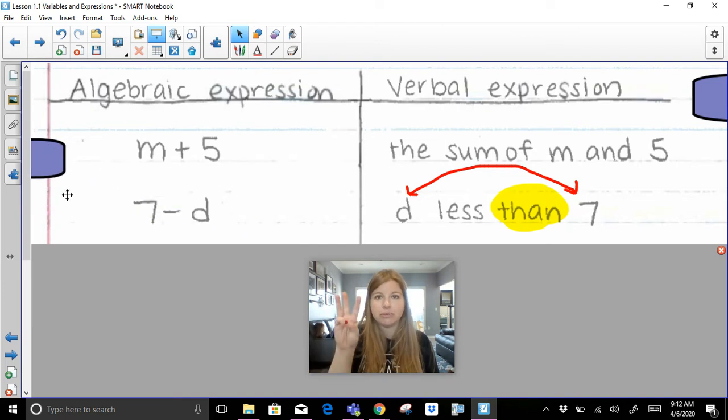So if I have d less than 7, d less than 7 actually means 7 minus d. Now, if that's confusing to you, imagine d was 3. If I say to you 3 less than 7, 3 less than 7 means you would do 7 minus 3 and you would have $4. Well, look at this expression now. That's what it's showing. 7 minus d. So 7 minus that 3.